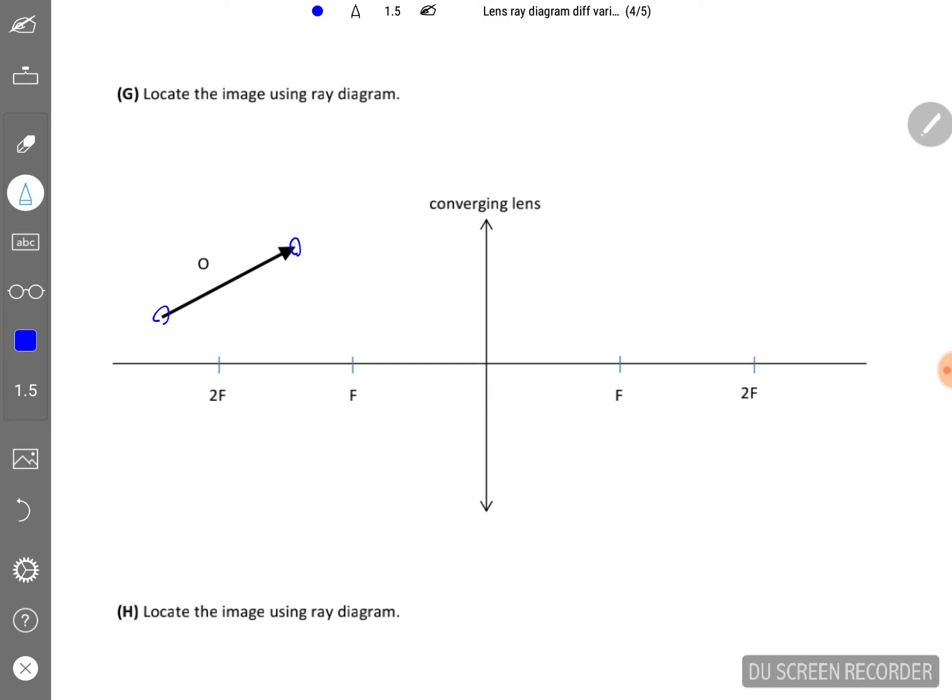And you apply the two rays that you always draw on both points. So the first one from the tip of the object passes through the optical center, just goes through straight. And the next one parallel to the principal axis passes through the F and then converges to a point.